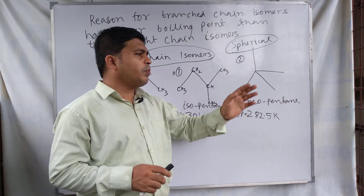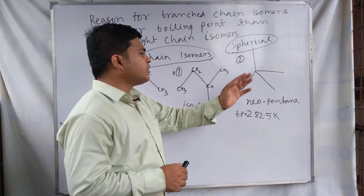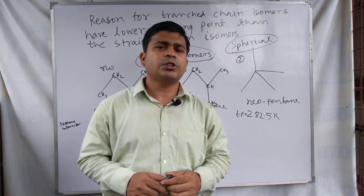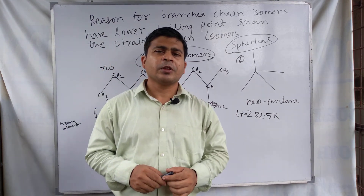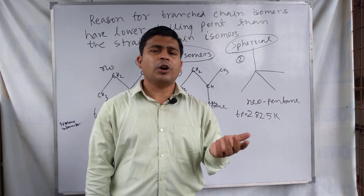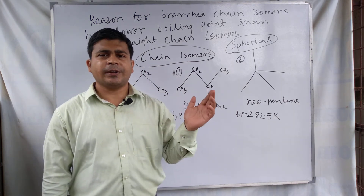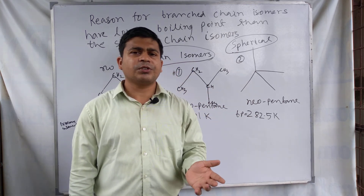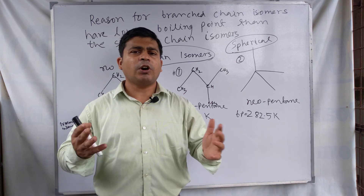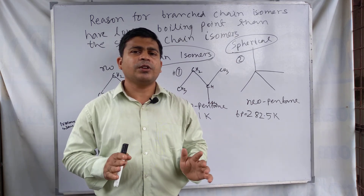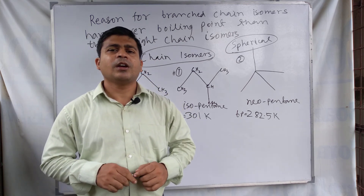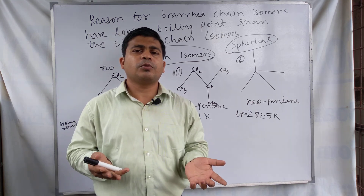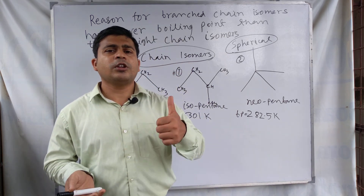For this reason, neopentane has the lowest boiling point — branched chain isomers have lower boiling points compared to straight chain isomers. This is the main point of discussion in this video lecture. Thank you for watching. If you want to watch other videos regarding organic, inorganic, or physical chemistry, you can see the playlist I made for this channel. If you find this video useful, please like and subscribe.